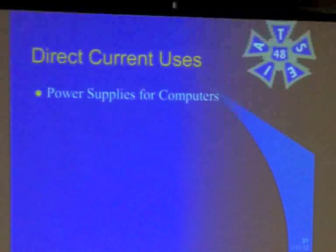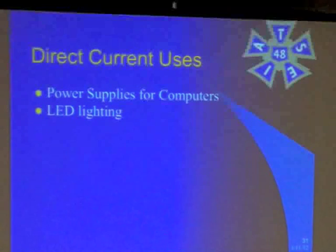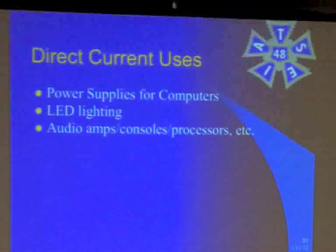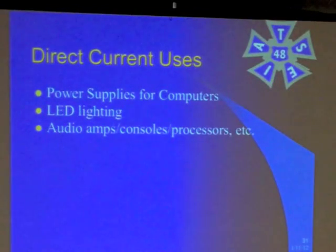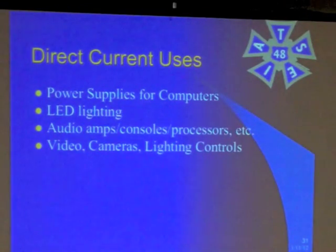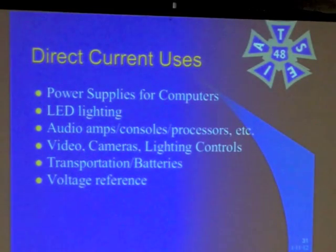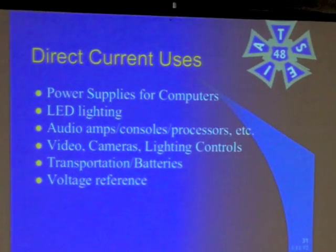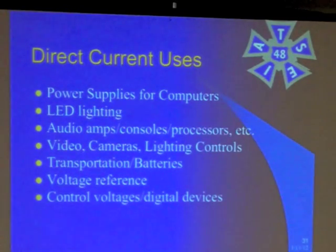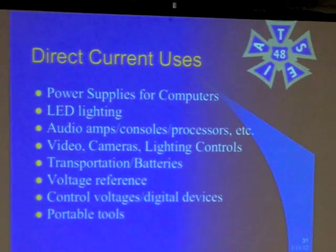What we use DC for: power supplies for computers, LED lighting, audio amps, consoles, processors — those are all DC devices. They plug into the wall, but they have power supplies that convert AC down to DC. Video cameras, lighting controls, transportation and batteries like golf cart batteries, voltage references, control voltages for digital devices, and portable tools like screw guns are all DC.